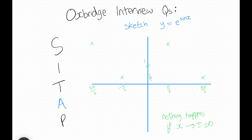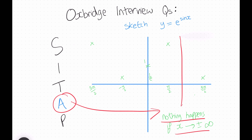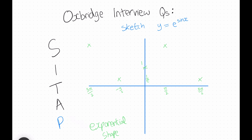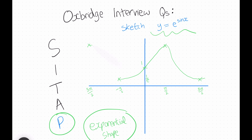Checking for asymptotes, nothing special happens as x goes to plus or minus infinity because the function is periodic — it just bounces between values. For the same reason, it has no horizontal asymptotes. Finally, looking at pattern, this function has an exponential shape: when the graph is rising it follows an increasing exponential, and when it's falling it follows a decreasing exponential.